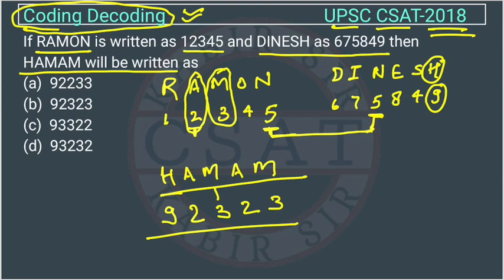Checking the options, the code for HAMAM comes out to 9, 2, 3, 2, 3, which matches option B. So option B is the correct answer. I hope you all understood this. If you still have any issues, you can connect with us and I will explain this question to you personally.